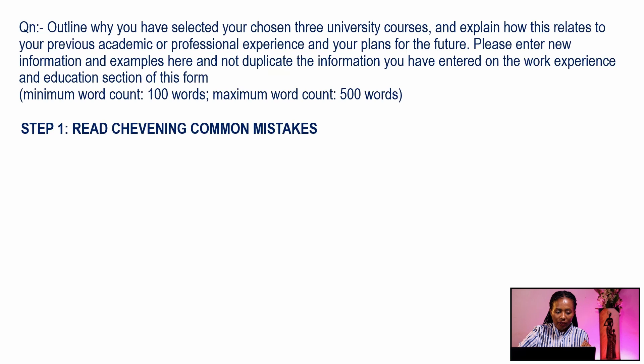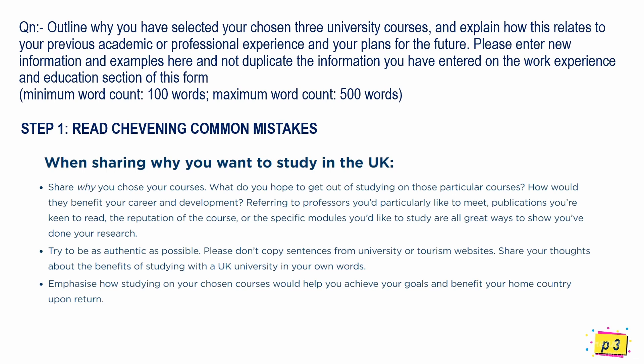We'll read the Chevening common mistakes link in the description box. For this particular essay, Chevening states: share why you chose your courses, what you hope to get out of studying on those particular courses, and how they would benefit your career and development. Referring to professors you'd particularly like to meet, publications you're keen to read, the reputation of the course, or specific modules you'd like to study are all great ways to show you've done your research. Try to be as authentic as possible — don't copy-paste sentences from university or tourism websites. Share your thoughts in your own words, and lastly, emphasize how studying on your chosen courses would help you achieve your goals and benefit your home country upon return.